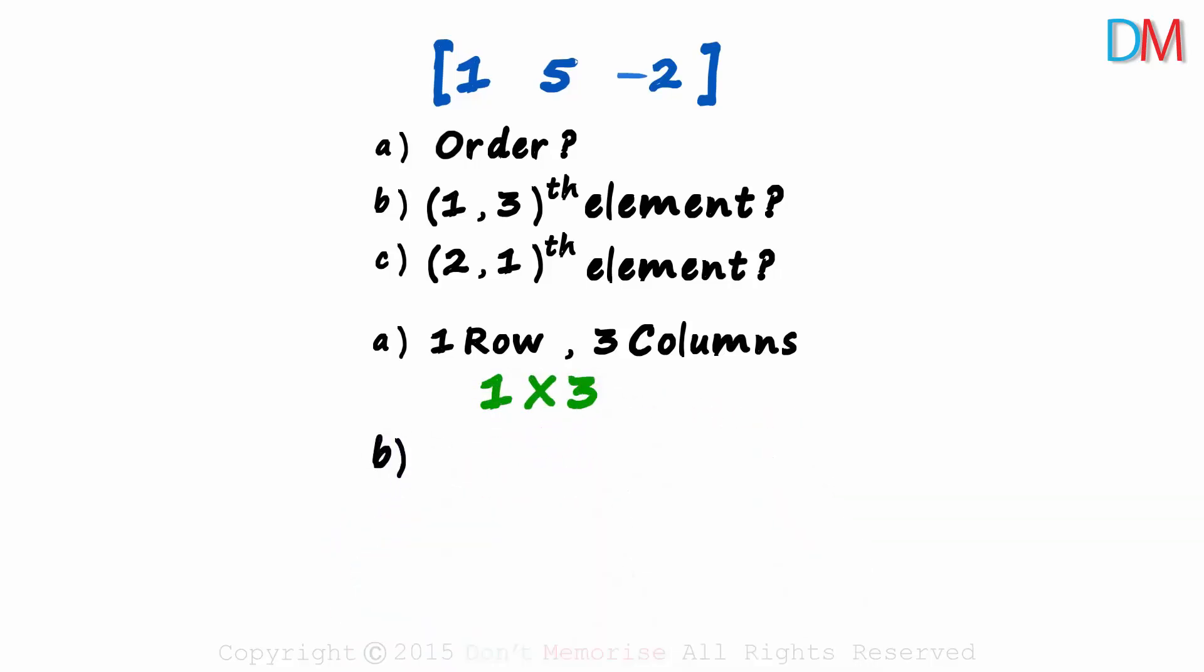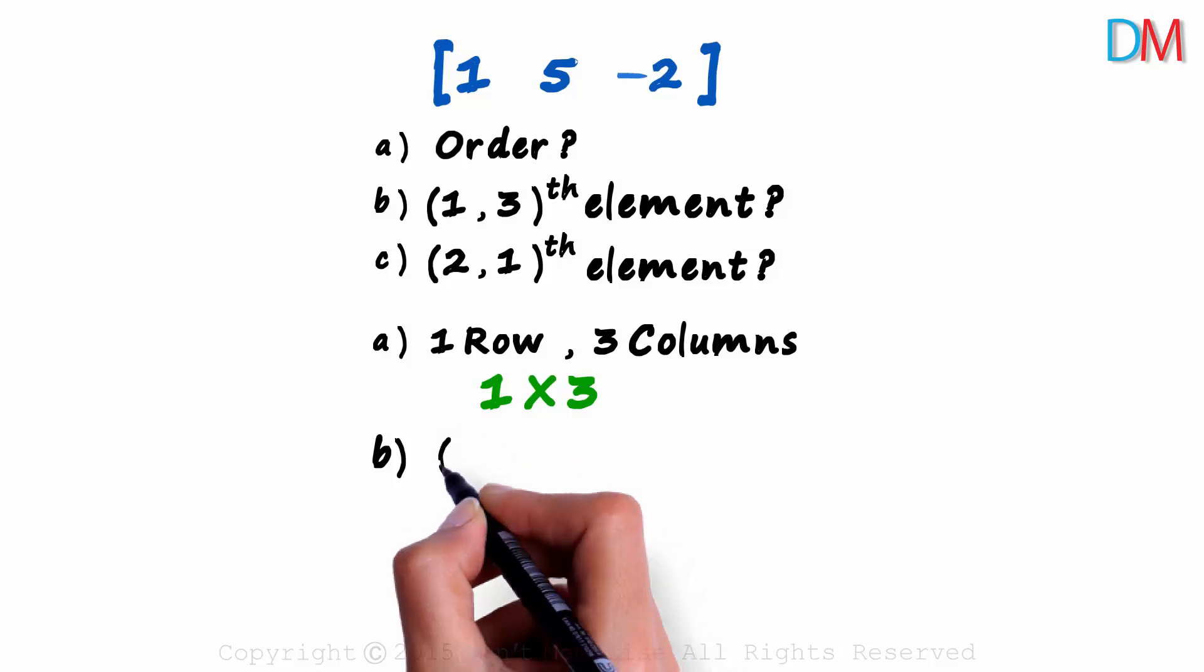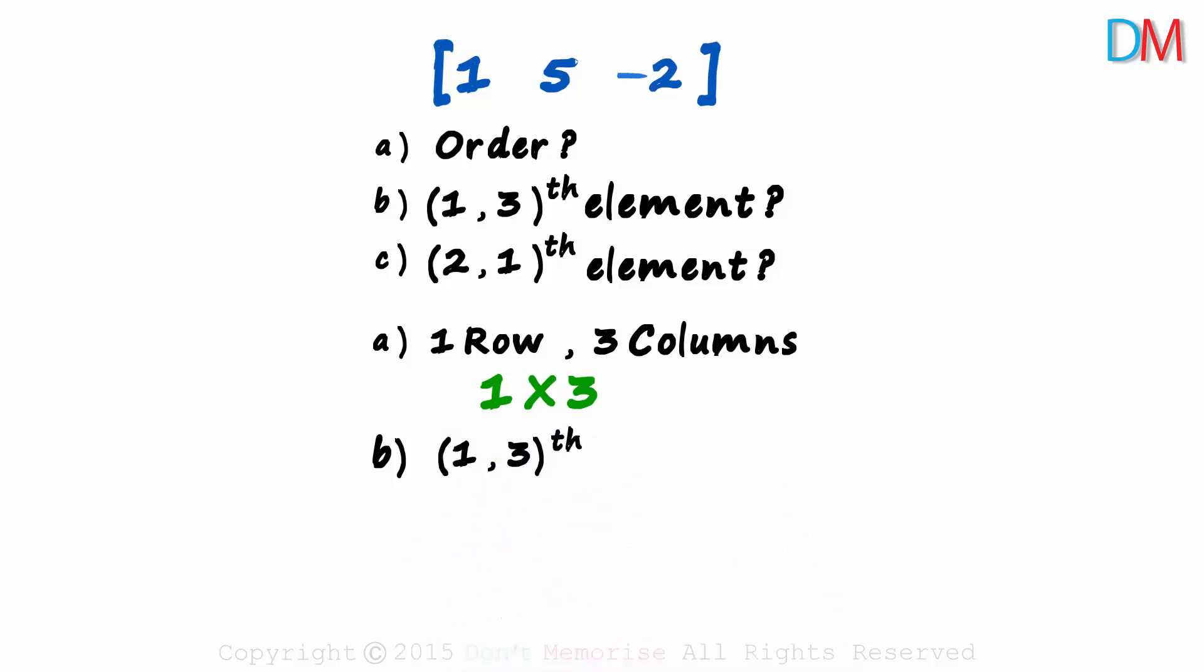Now for the second question. They have asked us for the 1, 3-eth element. This position implies that the element is in the first row and the third column. Now look at the matrix. First row and the third column. It's minus 2. Minus 2 is the 1, 3-eth element of this matrix.